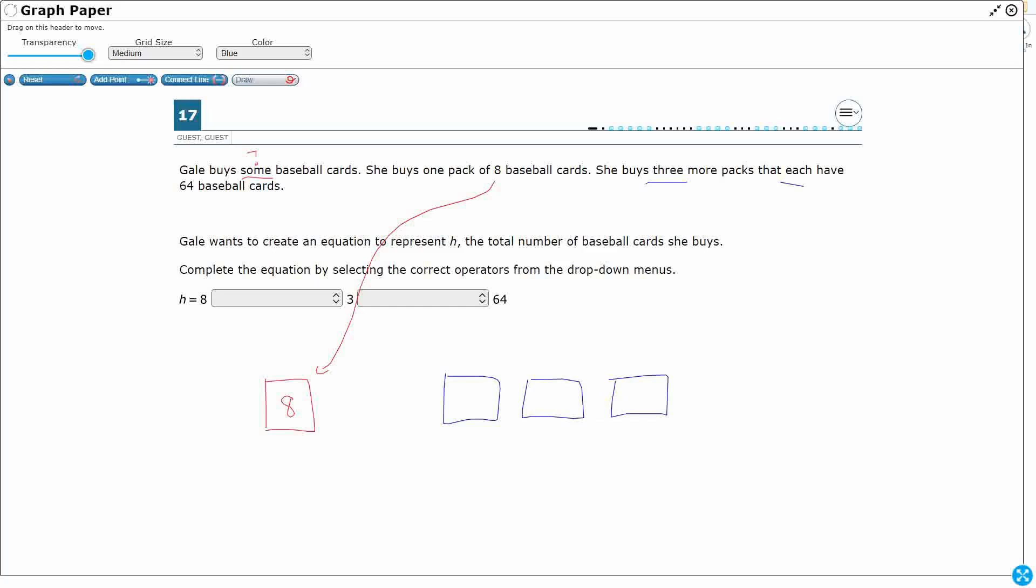Okay, so three more packs that each have 64 cards. Each, not 64 altogether, 64 each. So Gail wants to create an equation to represent h, the total number of baseball cards she buys.